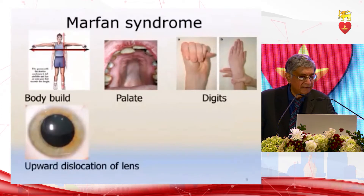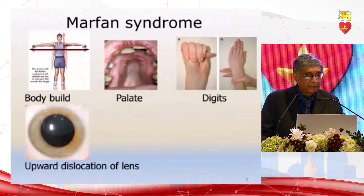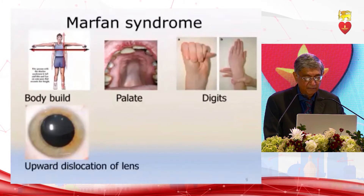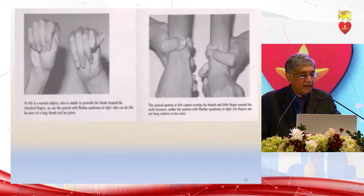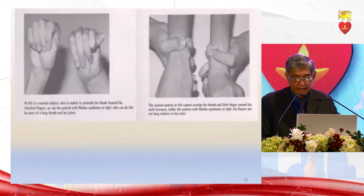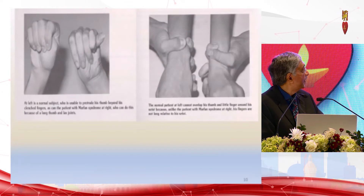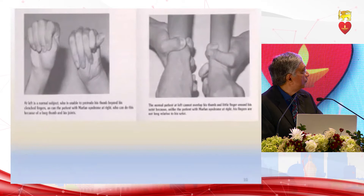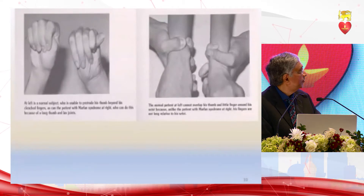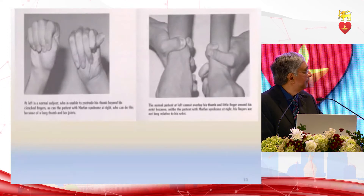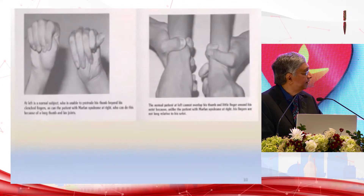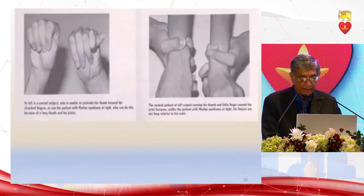Marfan syndrome: we recognize this syndrome now by the body build, the palate, the digits, and the lens. These are the physical signs of Marfan syndrome. The arachnodactyly can be demonstrated by making a hand grip — in Marfan syndrome the thumb protrudes out, whereas in a normal person it does not. When you grip the wrist, the two digits overlap because the digits are longer — the spider-like fingers. In a normal person, the digits do not overlap the wrist.